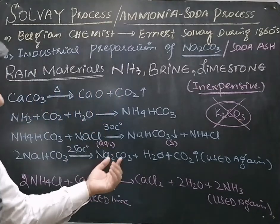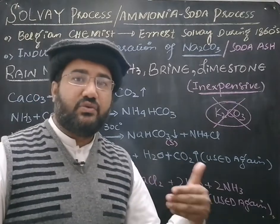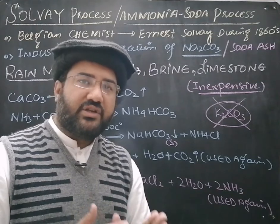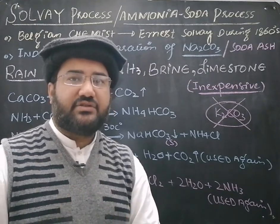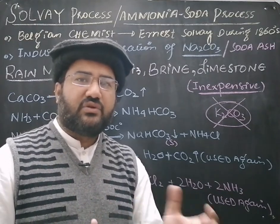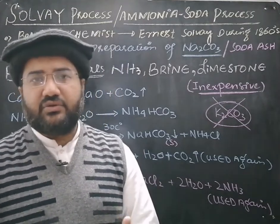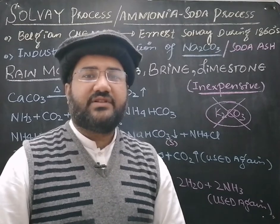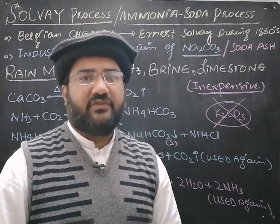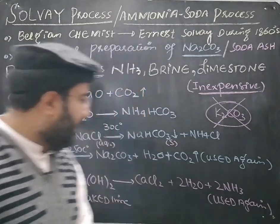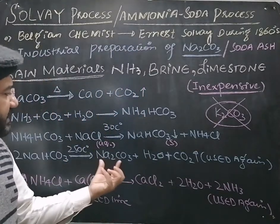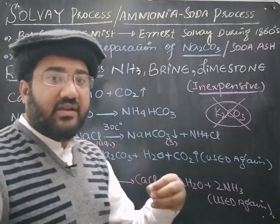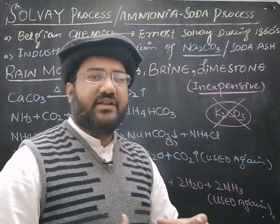The sodium carbonate obtained through the Solvay process is used for the production of washing soda, which is Na2CO3·10H2O, used in households for cleaning clothes. It is also used for the manufacture of soap and borax, which is a very important pharmaceutical compound. That is why millions of tons of sodium carbonate are produced every year because of its wide range of applications.